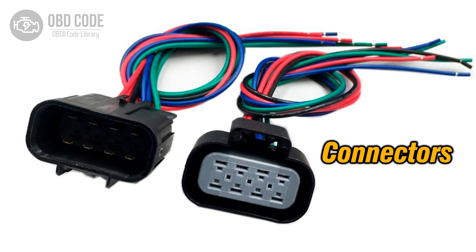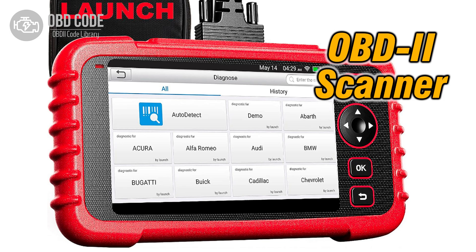4. Inspect the electrical connectors leading to the shift solenoid A for any loose connections or corrosion. Ensure the connectors are securely in place and clean as needed. 5. Use a diagnostic scanner to reset the fault code and clear the shift solenoid A control circuit low error. Monitor the vehicle for any recurring issues to ensure the problem has been resolved.